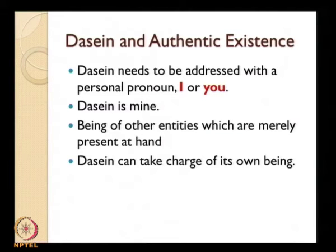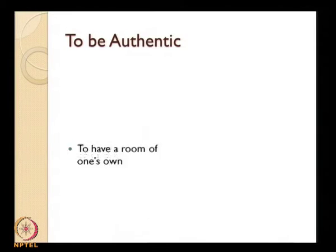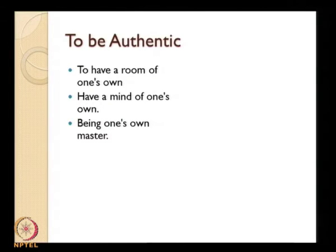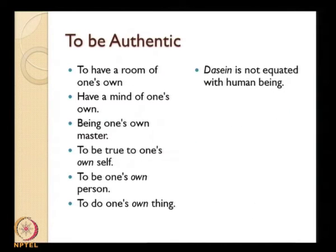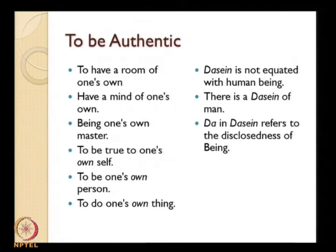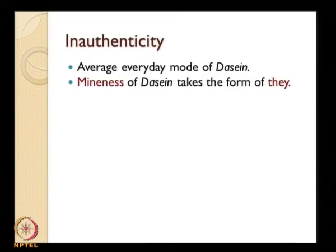This is the possibility of Dasein: I can take charge of my own being — that is authentic existence. The being of man is whatever it decides or has decided to be. The Dasein is its possibility. To be authentic in this sense is to have a room of one's own, a mind of one's own, to be one's own master, to be true to one's own self, to be one's own person. In inauthenticity, mineness takes the form of the they — there is no mine, but only a they; self is a they-self and Dasein is lost in the they.